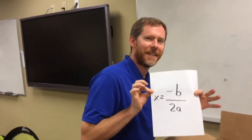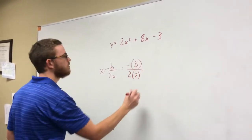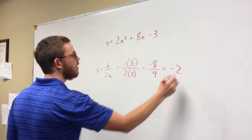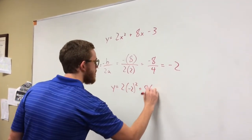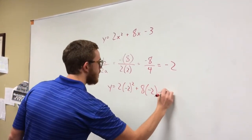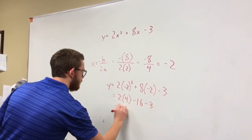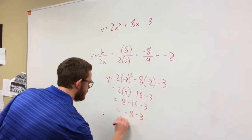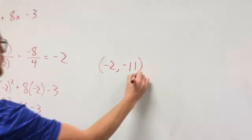Negative b over 2a — that's the x value of the vertex. Now substitute this in your function, and you'll find the y value next. First x, then y, the vertex is now in view. First x, then y, it's as simple as tying your shoe.